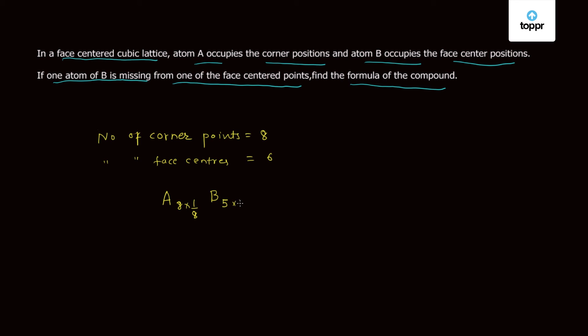Therefore, the net contribution of B is 5 times 1/2. So we can write this as A₁B₅/₂. So the formula of the compound is A₂B₅.